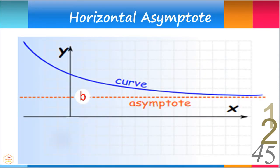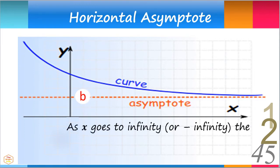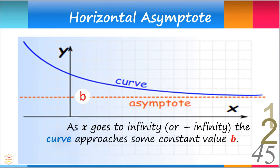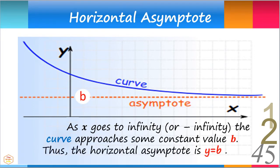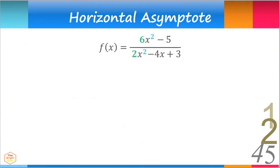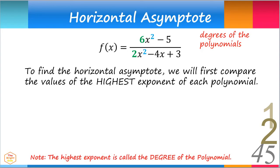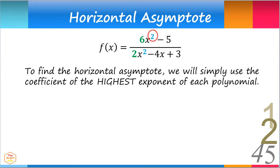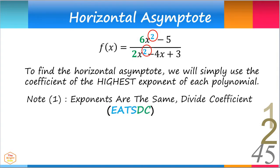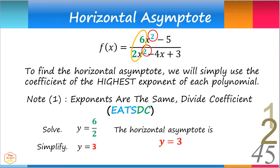Let's look at the horizontal asymptote. As the curve goes to infinity or negative infinity, the curve approaches some constant value b, so the horizontal asymptote is y equals b. To find the horizontal asymptote of a rational function, we compare the values of the highest exponent — the degrees — of each polynomial. In the numerator, the highest exponent is 2, and in the denominator, it is also 2. Since the exponents are the same, we divide the coefficients: 6 divided by 2 equals 3. Thus, the horizontal asymptote is y equals 3.